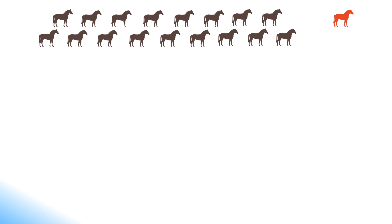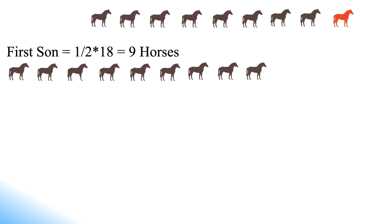So the first son gets half of the total horses. Thus he gets 1/2 multiplied with 18, which is equal to 9 horses. Total horses remaining is 18 minus 9, equals 9.